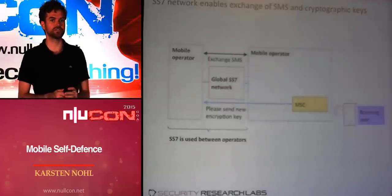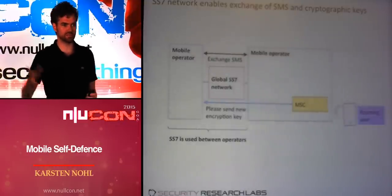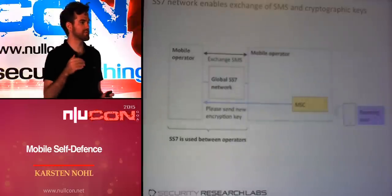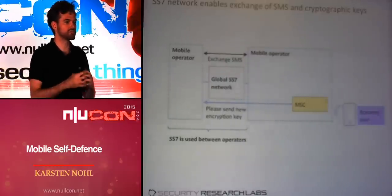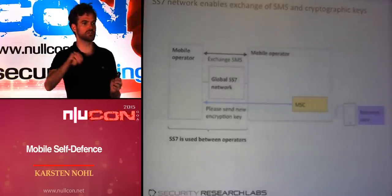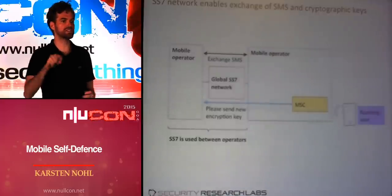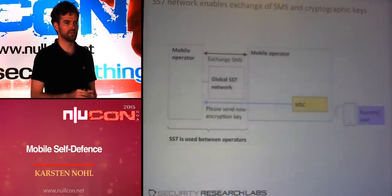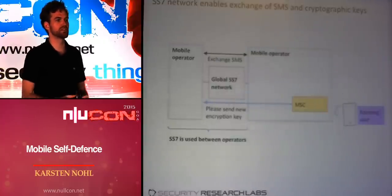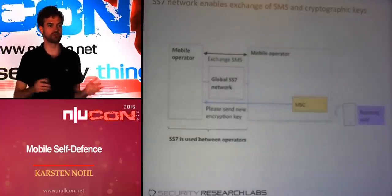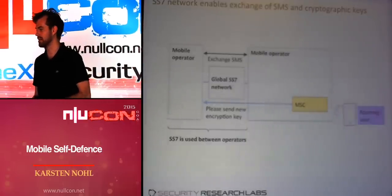Sometimes telcos have to exchange security-relevant information. For instance, when roaming in another country, you still want to use encryption while conducting a call. But the encryption key that fits your SIM card is stored on a server in Germany, so the Indian telco has a way of requesting that encryption key from Germany. If there's a global network and you can request encryption keys over it, you can imagine many things could go wrong if the wrong people request the wrong information — and that's what we want to focus on today.